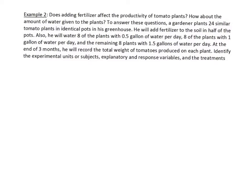In the second example, the experimental units are the tomato plants — you could be more specific and say 24 tomato plants. Both this and the first example are experiments. The next thing is the explanatory variable.